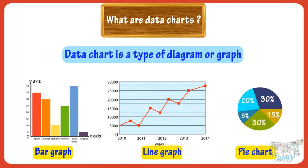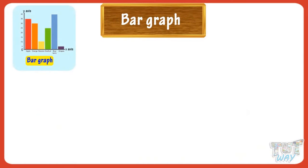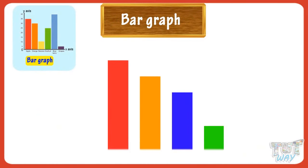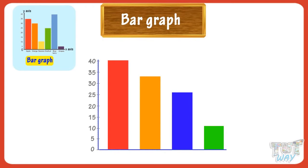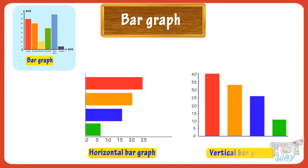Today we will learn what are bar graphs. A bar chart is a chart with rectangular bars where the length of the bars represents the value of something. There is a scale along the length of bars which is used to measure them. The bars can be plotted horizontally or vertically. Bar graphs are used to compare the values of given items at any given point of time.